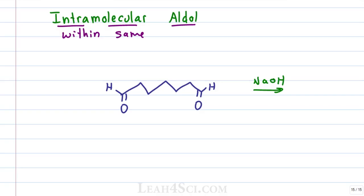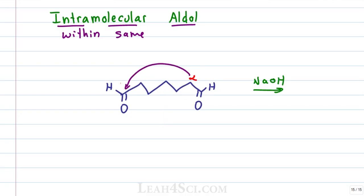Say you're given a molecule like heptanedial, which is a seven carbon chain with an aldehyde on either end, and told to react it with NaOH. You should recognize a strong base and a carbonyl like an aldehyde or ketone is going to give you an aldol reaction. But instead of looking for a second molecule to attack, we'll look at the same molecule and have one end attack the other. First, we need to identify the alpha carbon. We have a carbonyl on the right giving an alpha on the right, and a carbonyl on the left giving an alpha on the left. Given that the molecule is symmetrical, it's the same thing, so we'll show that the alpha on the right is going to attack the carbonyl on the left, closing this molecule into a ring.